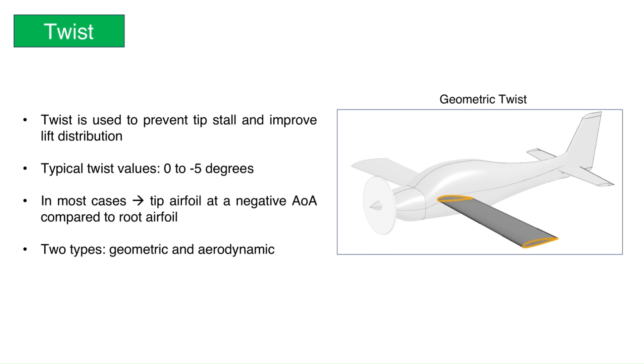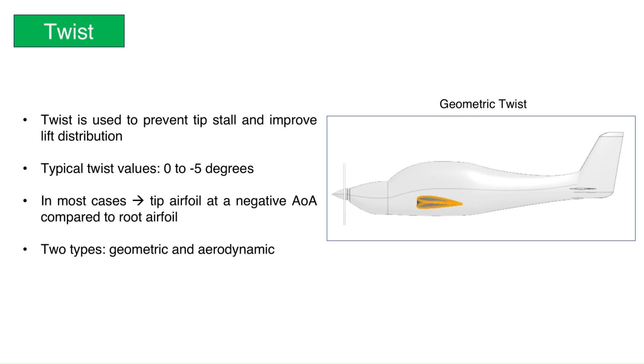Twist. Twist is used to prevent tip stall and to improve the lift distribution on the wing. Twist changes the spanwise lift distribution because it changes the local angle of attack seen by each airfoil. This influences the drag due to lift. Typically, wings are twisted between 0 and minus 5 degrees, the minus sign indicating that the leading edge is twisted downwards. Geometric twist is the actual change in the airfoil angle of incidence, measured with respect to the root airfoil. In most cases, the tip airfoil is at a negative angle of attack compared to the root airfoil. This is called a washout. A wing with washout tends to stall at the root before the tip, which improves control.